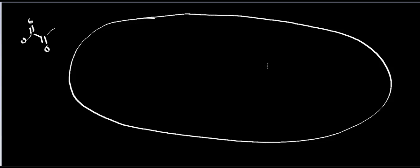There are, however, pyruvate transporters in the mitochondria. Pyruvate kinase is in the cytosol, so ultimately there's going to be some pyruvate out in the cytosol. That pyruvate can enter the mitochondria via those pyruvate transporters, and now we have pyruvate in the mitochondrial matrix.